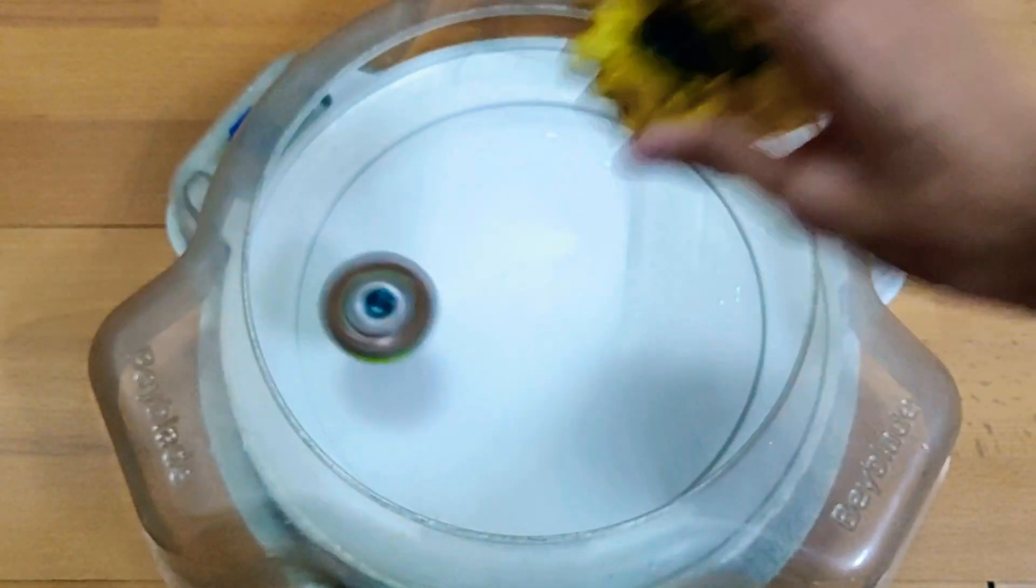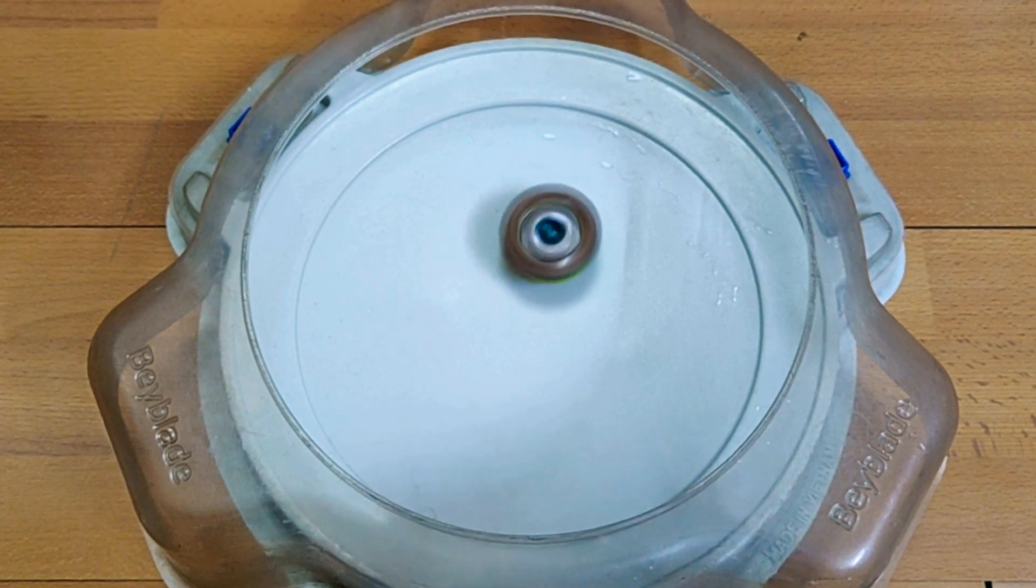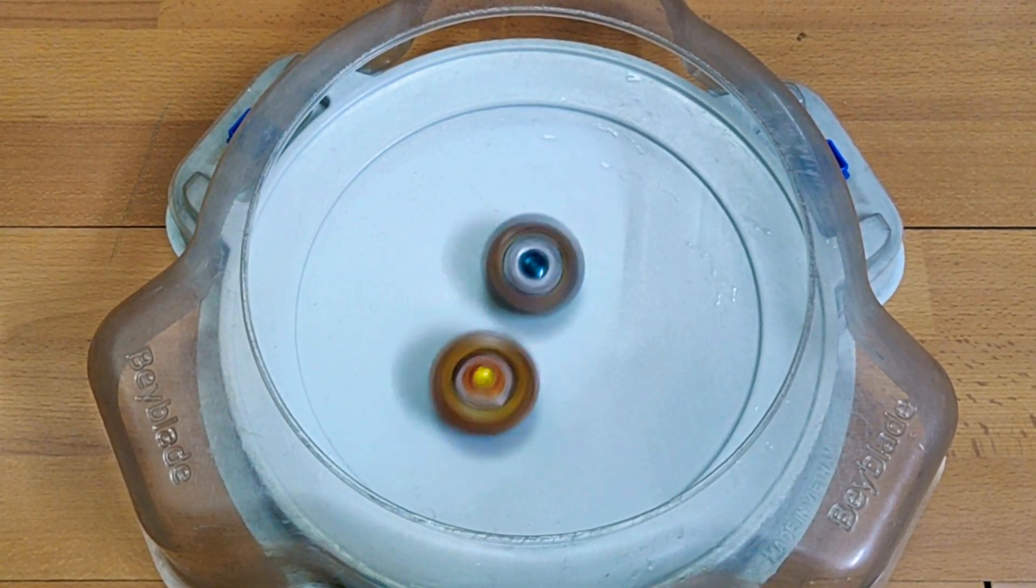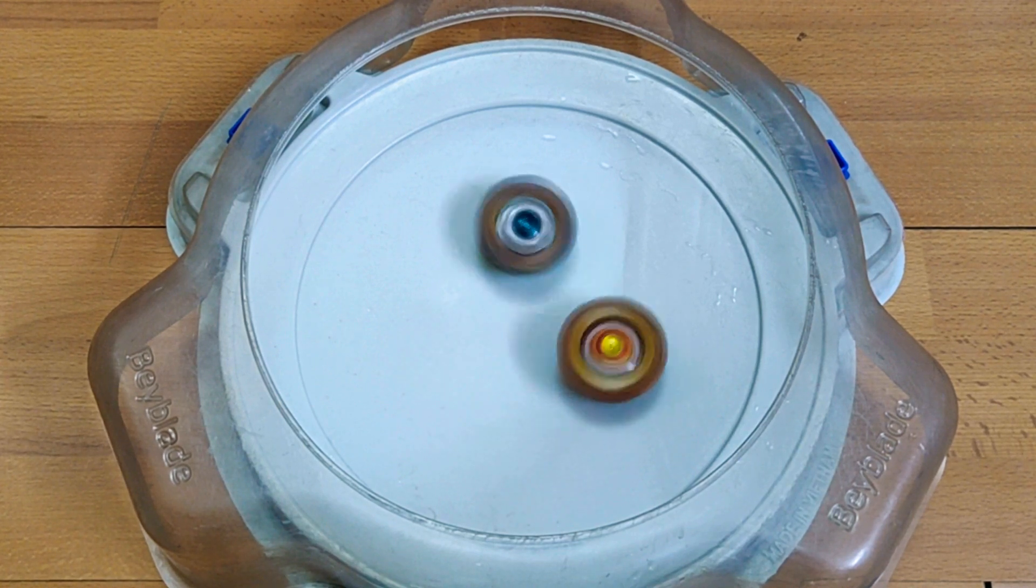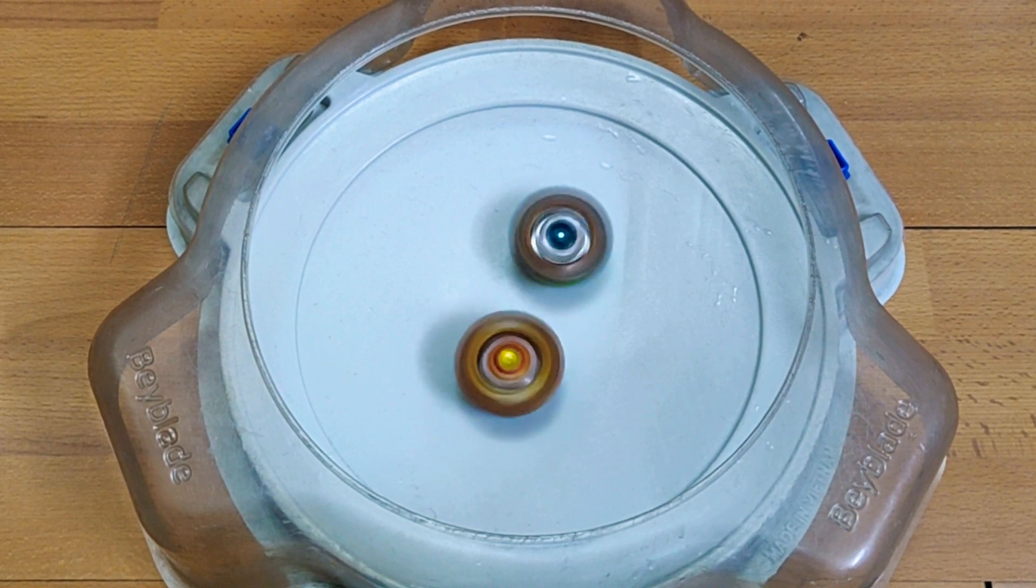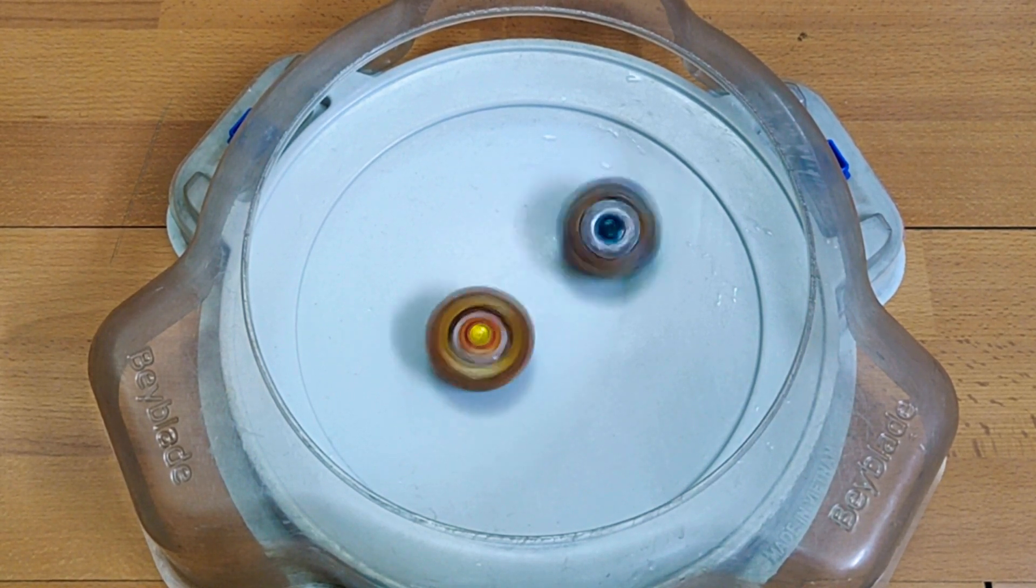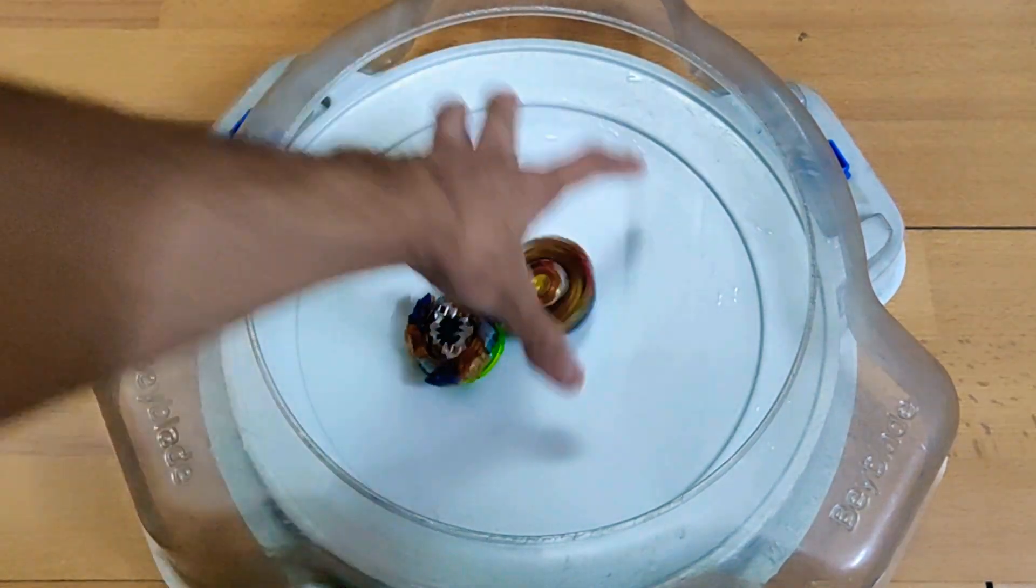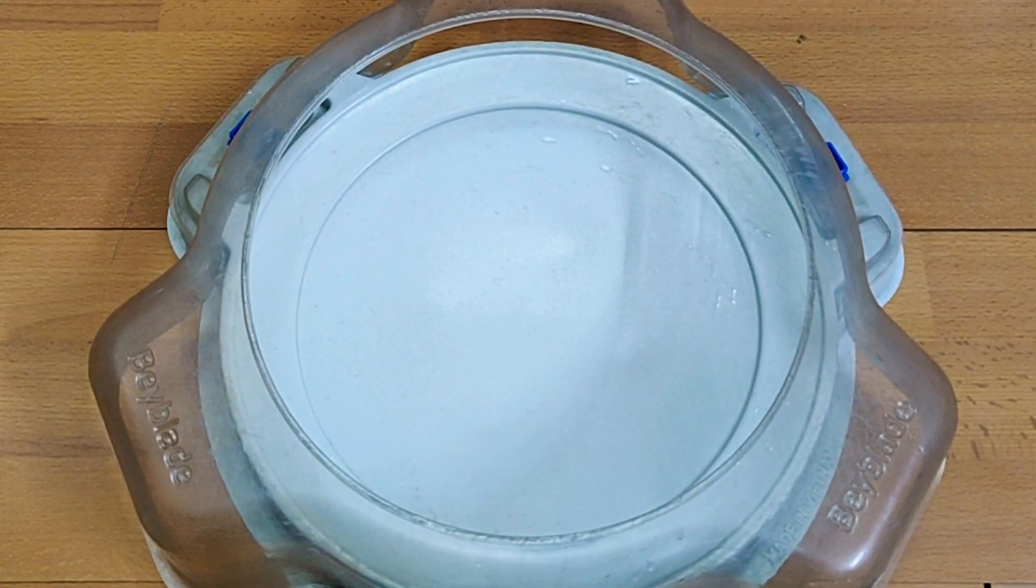3, 2, 1, go shoot. Strong hits there. Whoa, that's a 1, 2 Shu and Spriggan. Moving on to the next round.